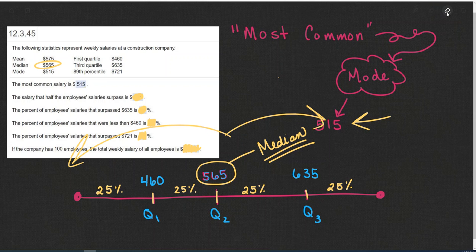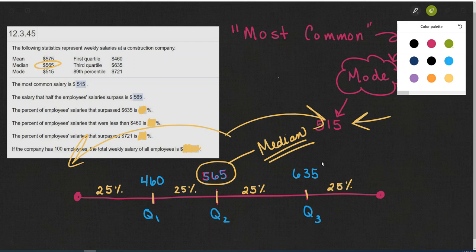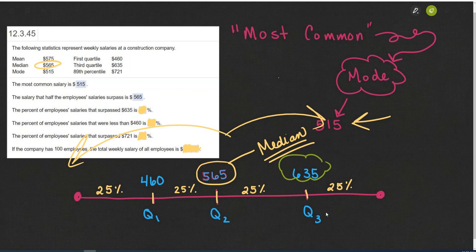So the salary that half of the employees' salaries surpass is $565. Now the percent of employees' salaries that surpassed $635, when we see that $635 is quartile three...